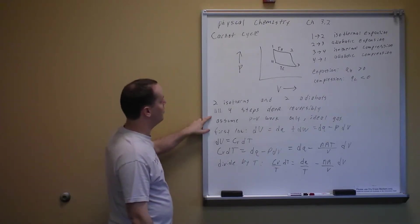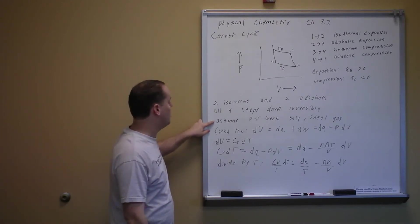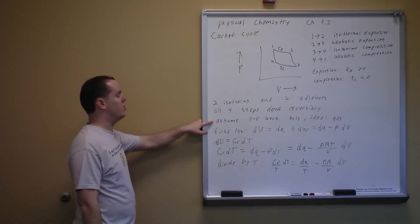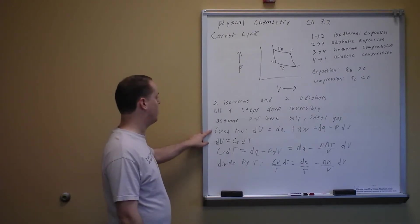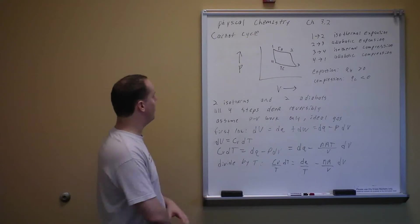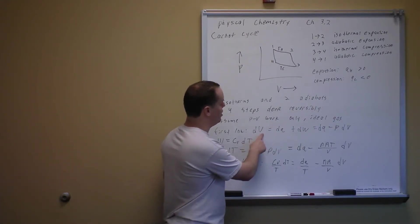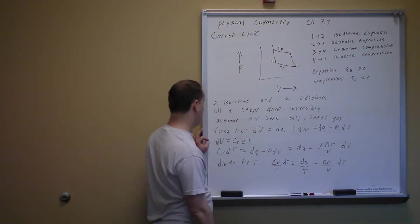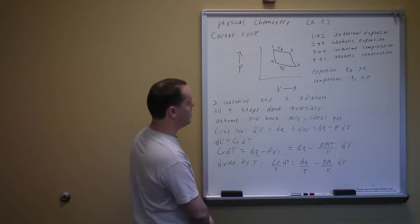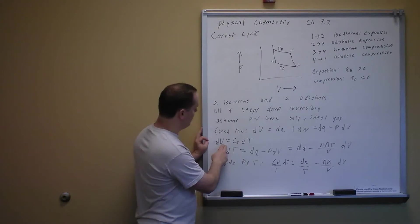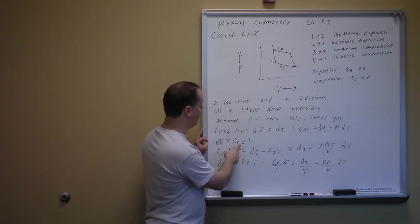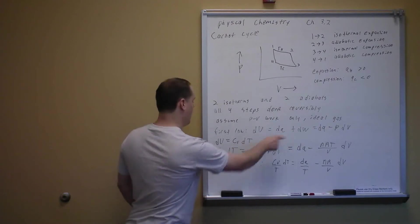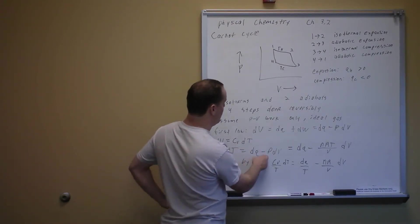We assume the system does PV work only and we work with an ideal gas. From the first law, dU equals dQ plus dW, and dW equals minus P dV, so dU equals dQ minus P dV. We also know dU equals CV dT, where CV is the heat capacity at constant volume. By transitivity, CV dT equals dQ minus P dV. Using the ideal gas law to substitute for P gives CV dT equals dQ minus (nRT/V) dV.